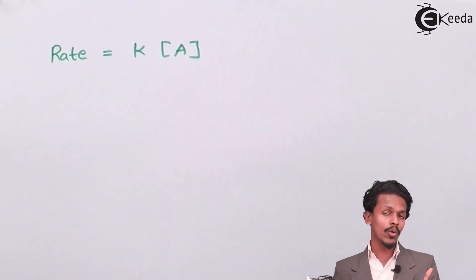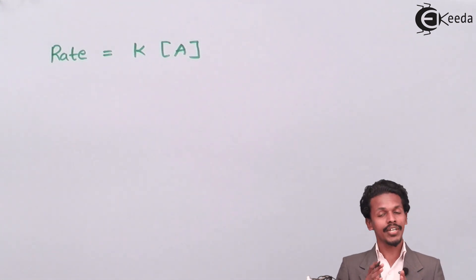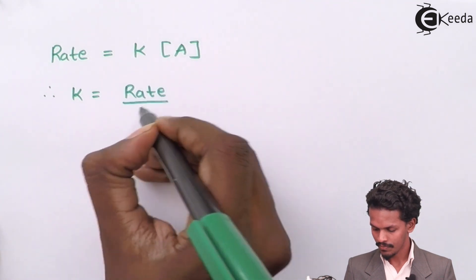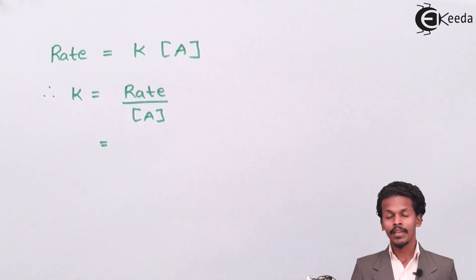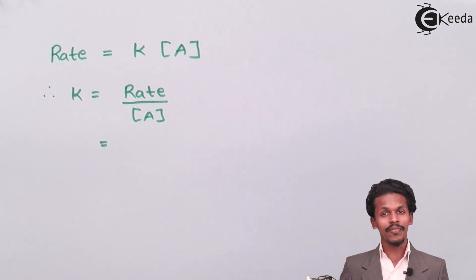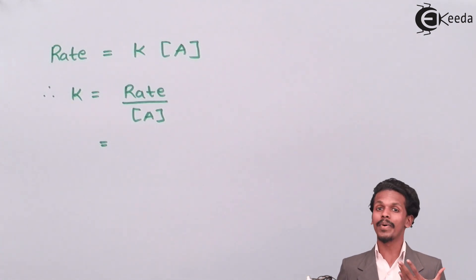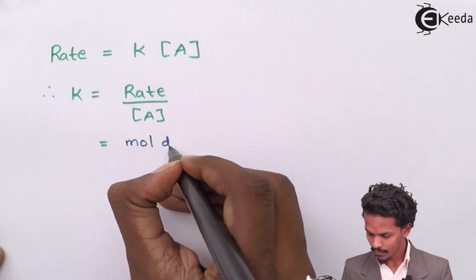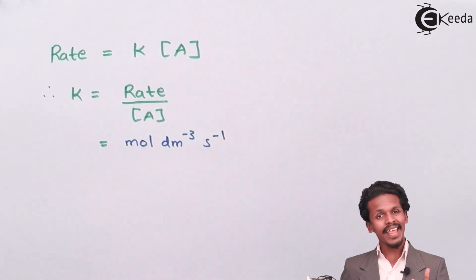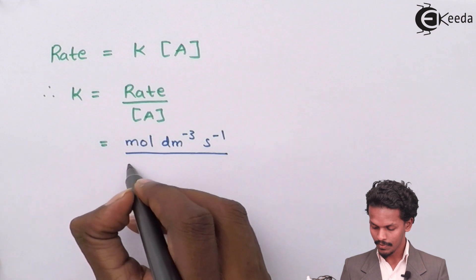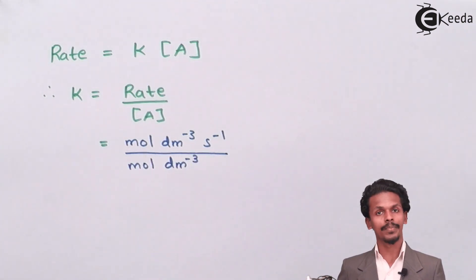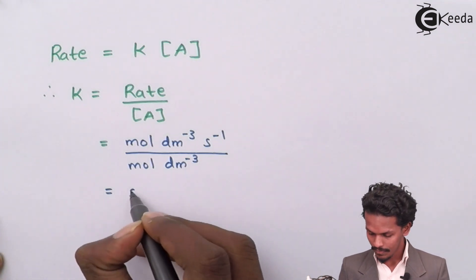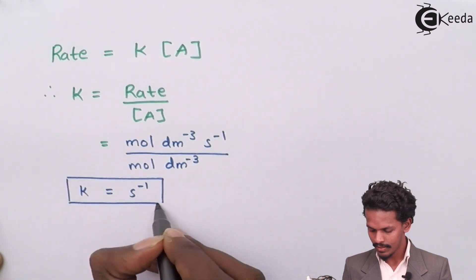Since we have to calculate the unit for rate constant, I will rearrange so that k is isolated. We know the unit of rate is moles per dm³ per second, and the unit of concentration is moles per dm³. Dividing rate by concentration, the unit of rate constant for a first-order reaction is per second, or second inverse (s⁻¹).